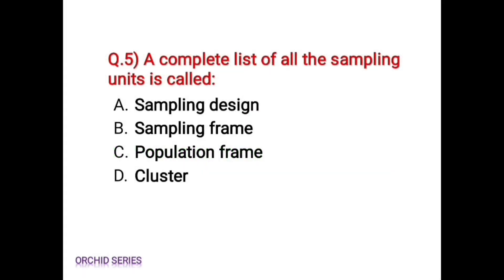Question 5: a complete list of all sampling units is called — Option A, sampling design. Option B, sampling frame. Option C, population frame. Option D, cluster.